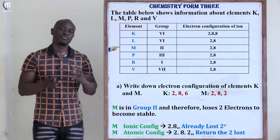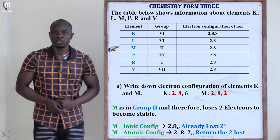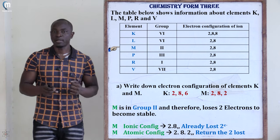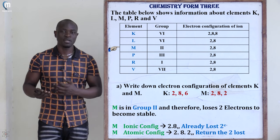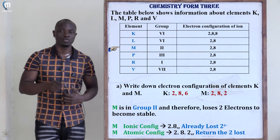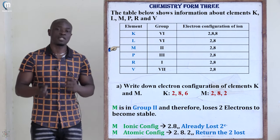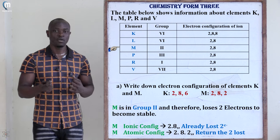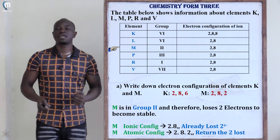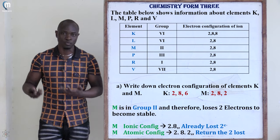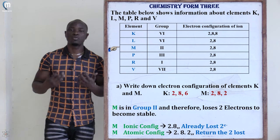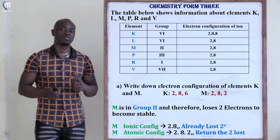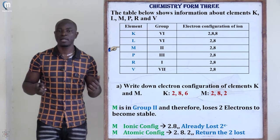Element M is in group two. Its ionic configuration is 2,8, meaning it has already lost two electrons. To find the atomic configuration, we add back those two lost electrons to the ionic configuration. Therefore, the atomic configuration of element M is 2,8,2. To summarize: element K has an electronic configuration of 2,8,6 and element M has an electronic configuration of 2,8,2.